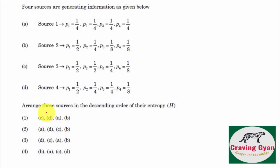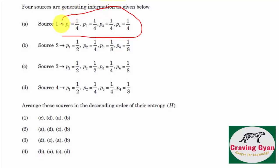Eleventh question: four sources generating information are given, arrange the entropy in descending order. Source 1 is emitting sequences with probability P1=P2=P3=P4=1/4. We know entropy is maximum whenever the probability is equiprobable, so you have to find the first such option — option number 2 is going to follow.